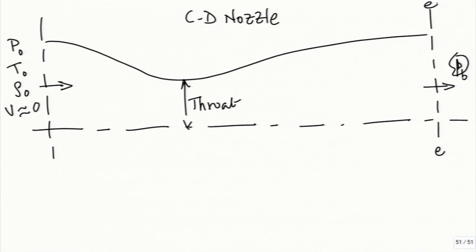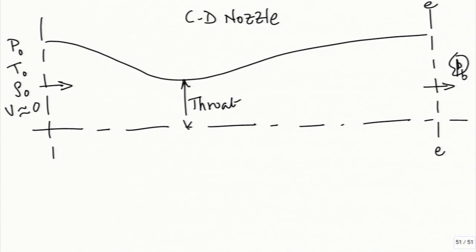Up to the throat we have exactly what we just discussed, namely a purely convergent nozzle, and then I have a divergent part attached to it. When I want to start reducing the back pressure, if the back pressure is equal to the upstream stagnation value P naught, there is no pressure difference to drive the flow and there is absolutely no flow. As you keep on reducing the back pressure initially, the entire nozzle will behave in a subsonic fashion because the pressure difference is not large enough for the flow to reach Mach number 1 at the throat.